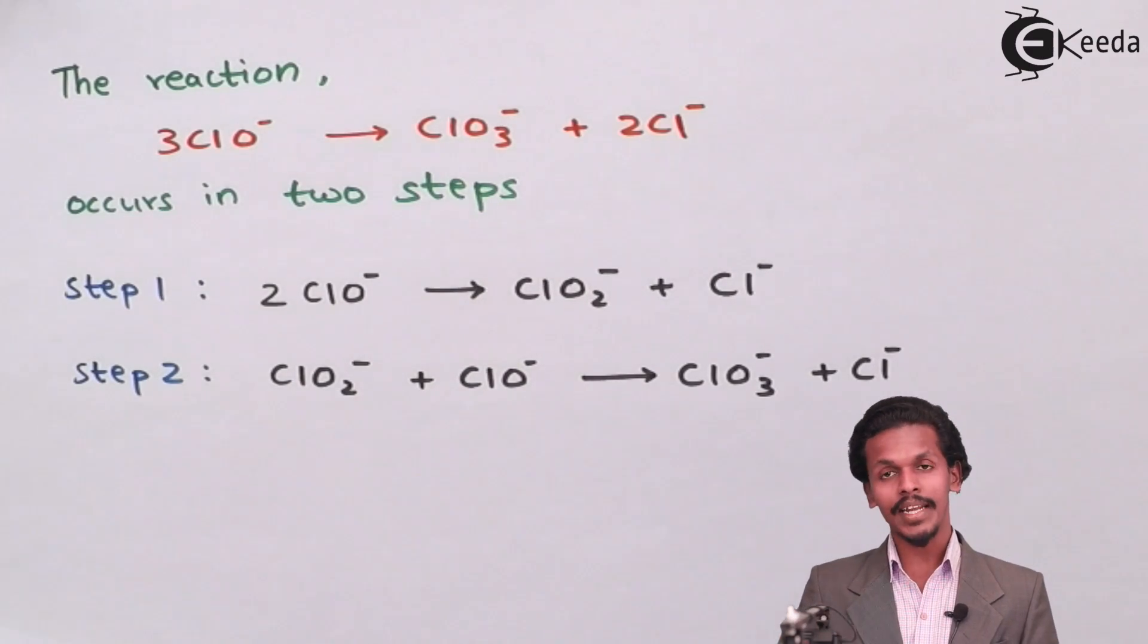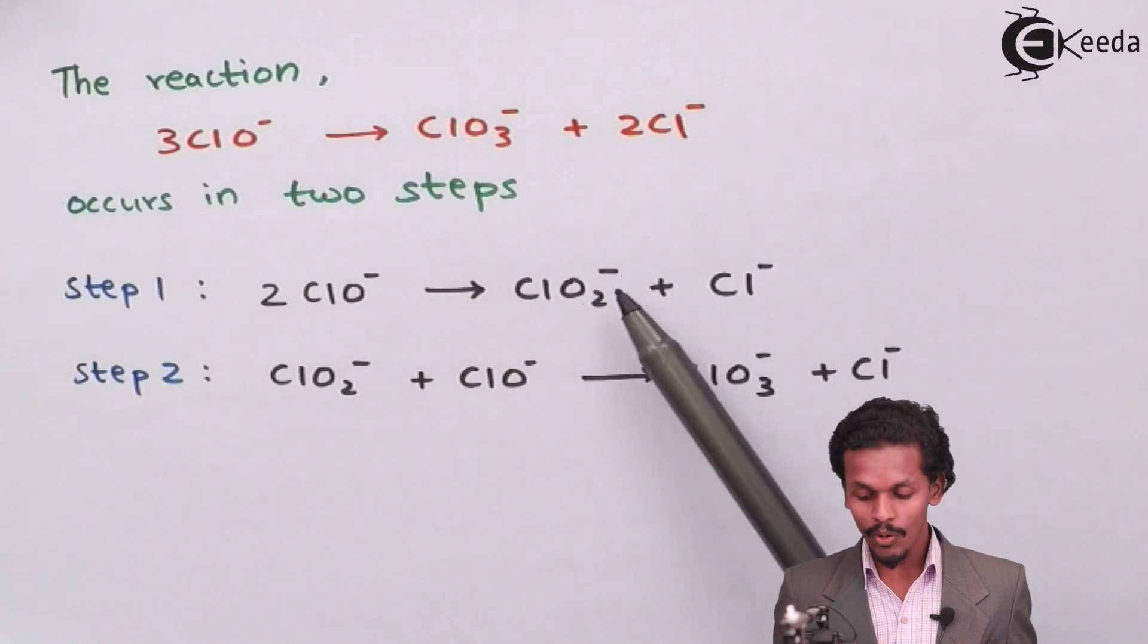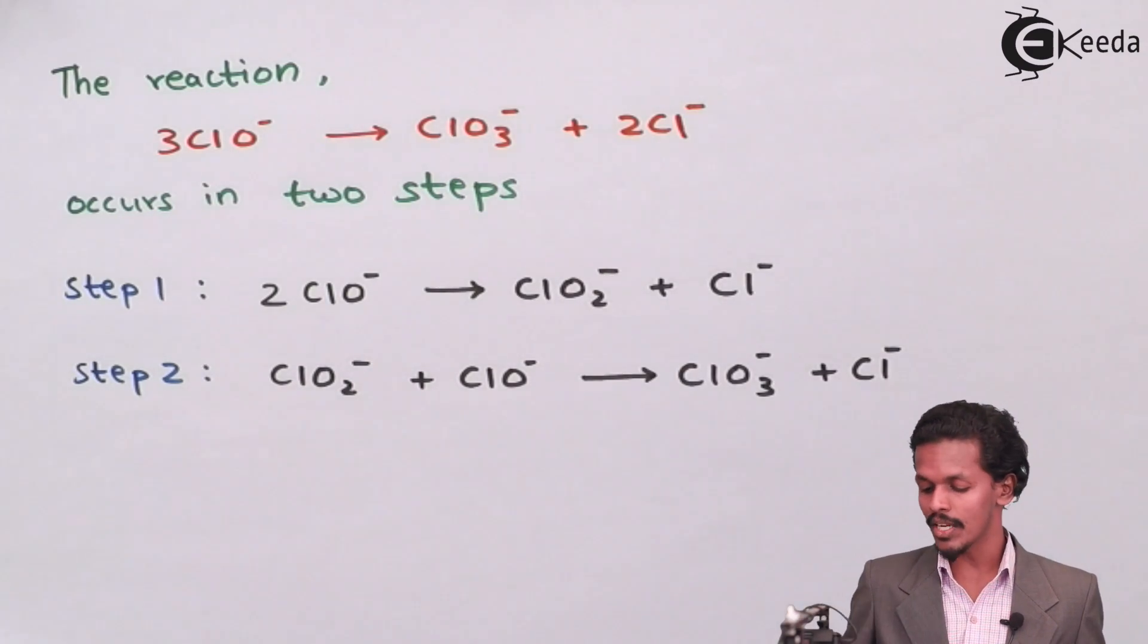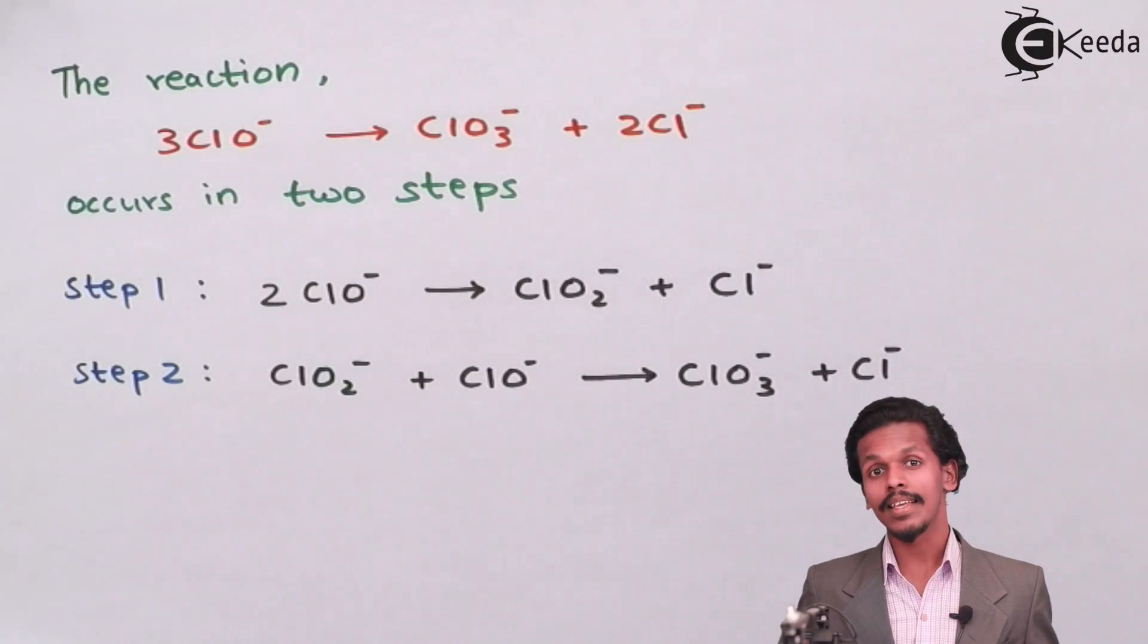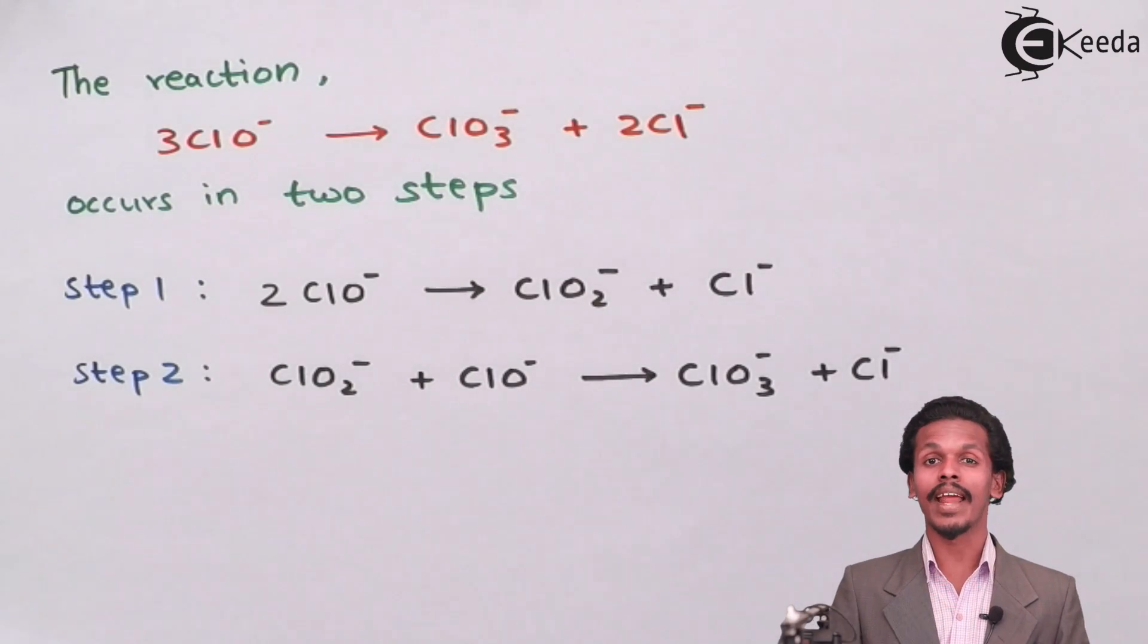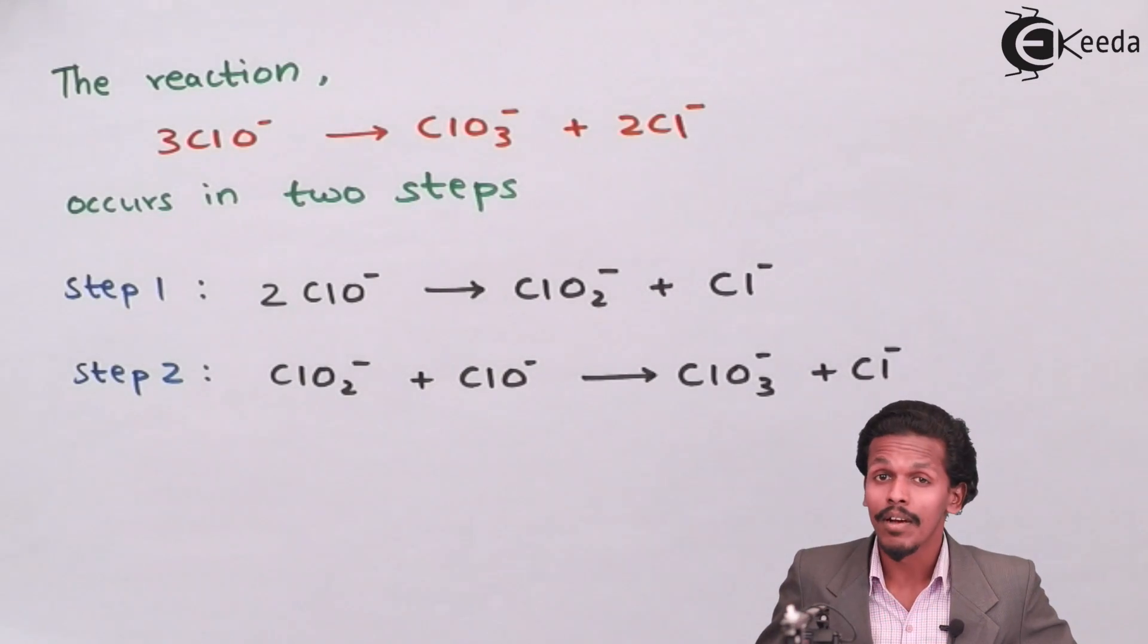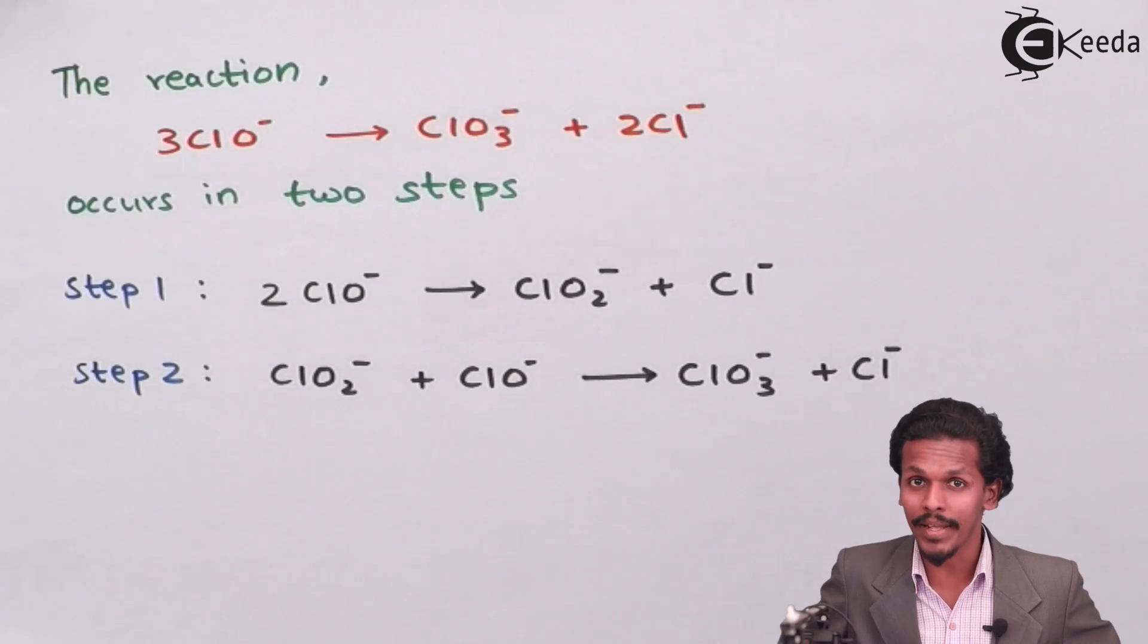As you can see, the same ClO2- which has been produced in step number 1 is consumed in step number 2 and hence this is said to be a reaction intermediate. Reaction intermediates are only formed in complex reactions but not in elementary reactions. So this is what a complex reaction is.